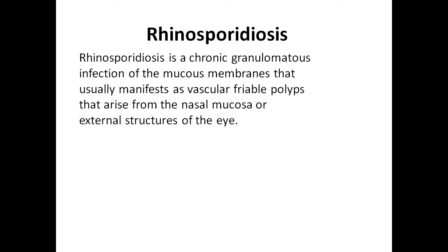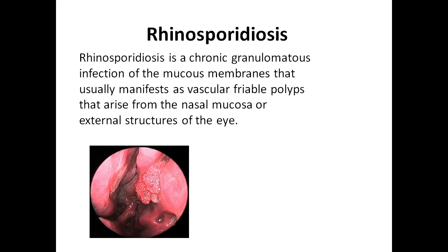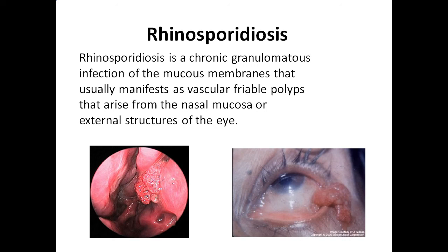Rhinosporidiosis is a chronic granulomatous infection of the mucous membranes that usually manifests as vascular friable polyps that arise from the nasal mucosa or external structures of the eye.